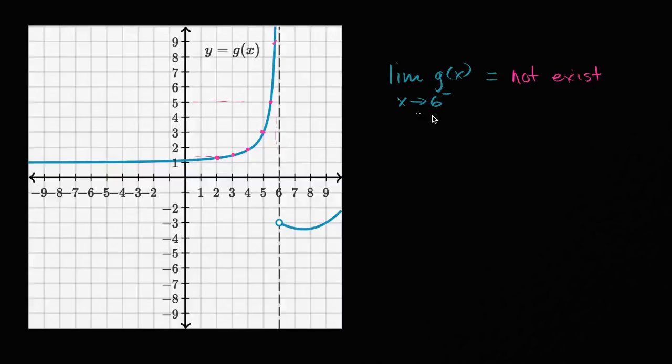And this is interesting, because the left-handed limit here doesn't exist, but the right-handed limit does. If I were to say the limit of g of x as x approaches six from the right-hand side, well, let's see.